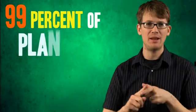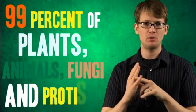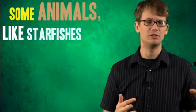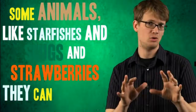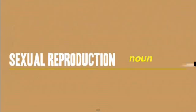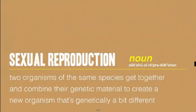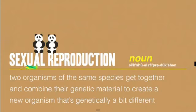If it's possible for some animals to reproduce without having sex, why doesn't everybody just do it that way? Some biologists have calculated that 99% of plants, animals, fungi, and protists have sexual reproduction at least some of the time. Some animals, like starfish, slugs, and strawberries, can do either, depending on how they're feeling. Sexual reproduction means two organisms of the same species combine their genetic material to create a new organism that's genetically different from both of them.